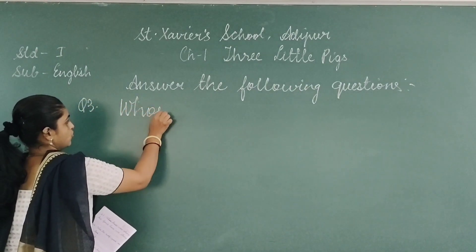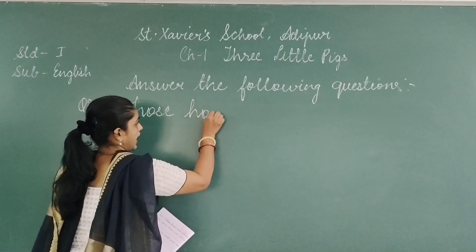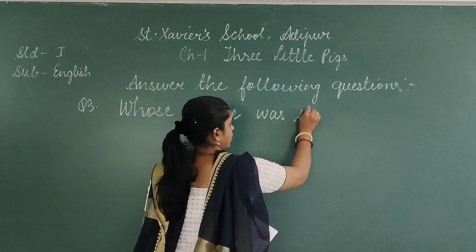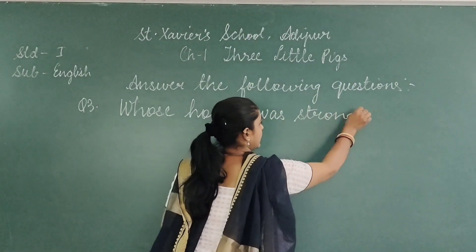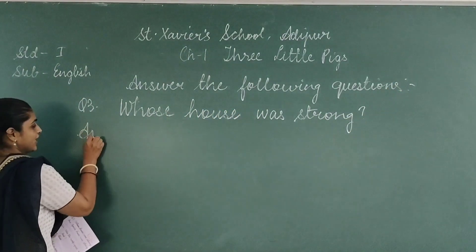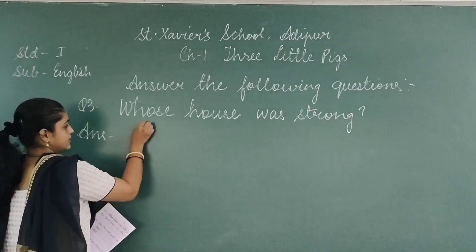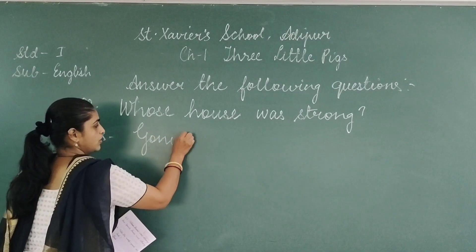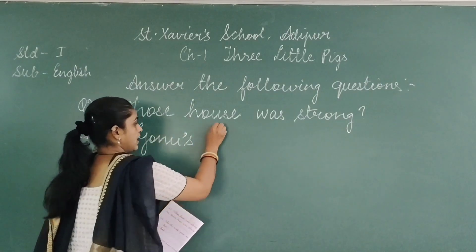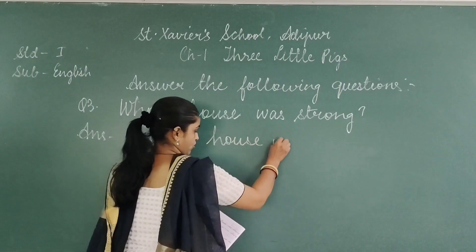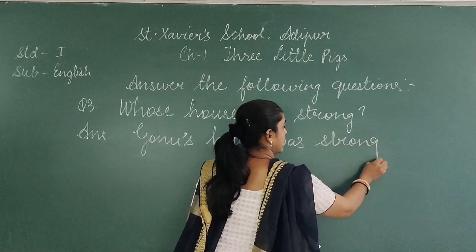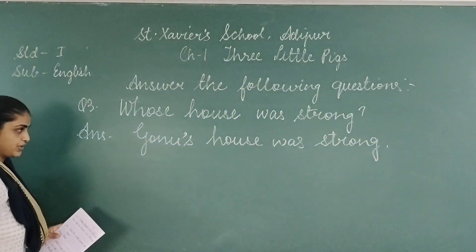Whose — W-H-O-S-E — whose house was strong? Kiska ghar strong tha? It is GONU's. So you are going to write the answer: GONU's house was strong.